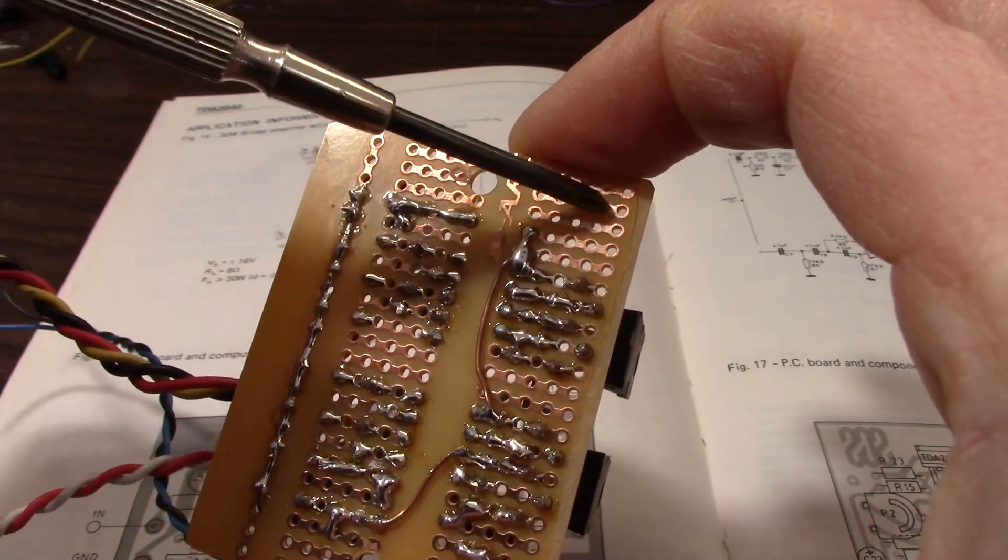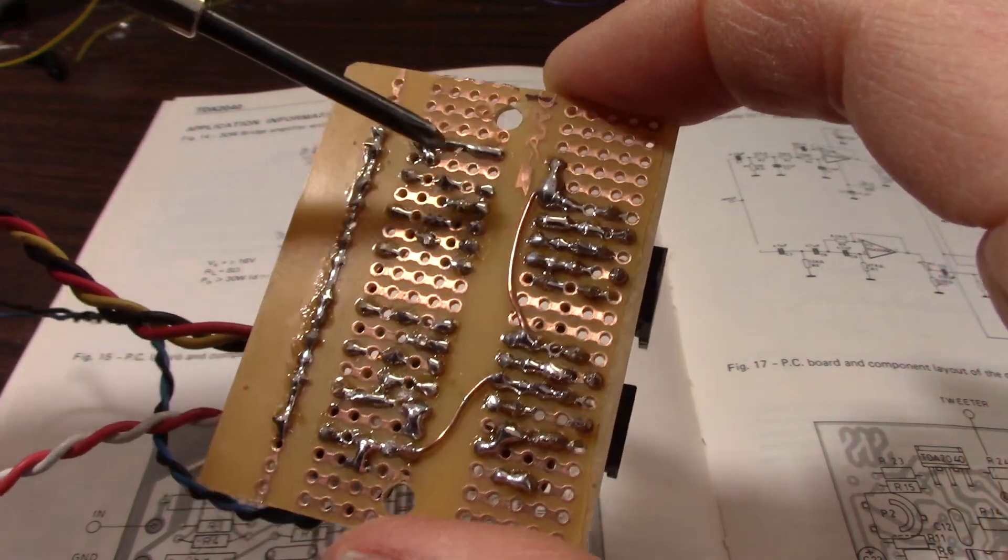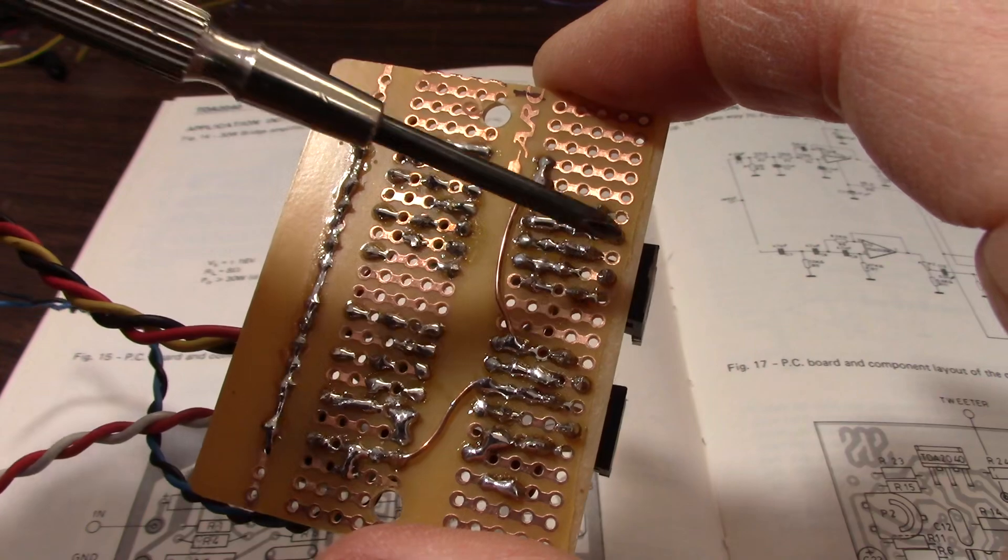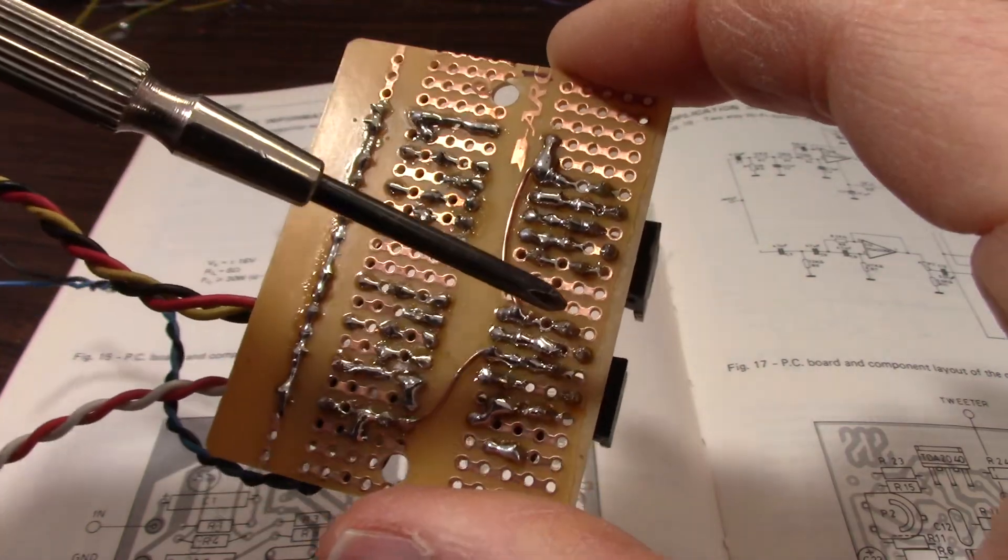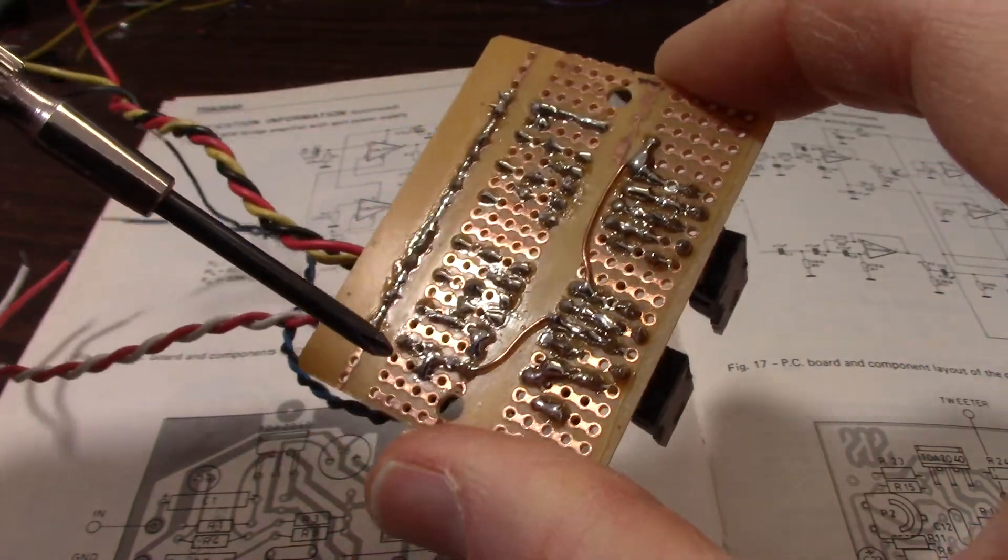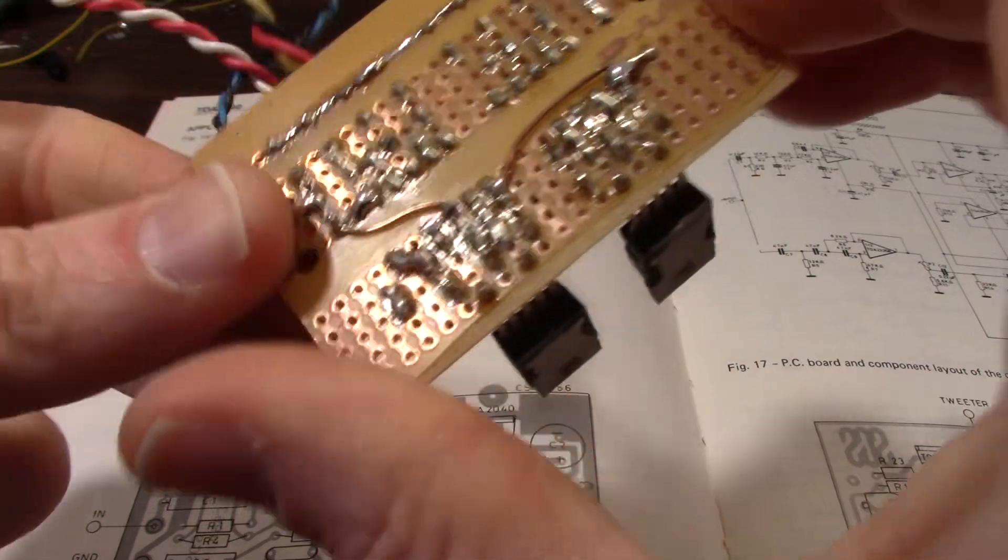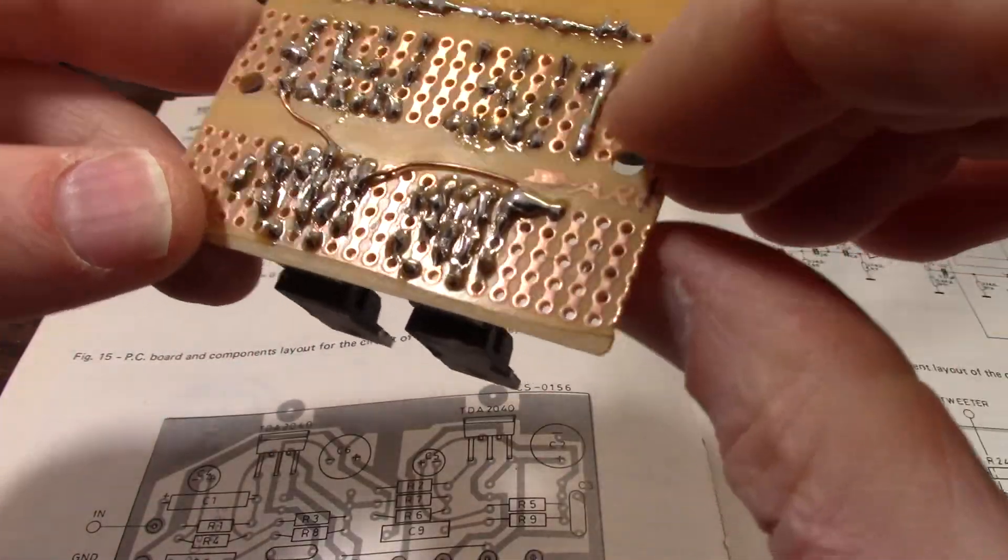At least with the older ones, these traces would lift pretty easily, so you have to pretty much solder across the whole thing to make sure you're not going to get a crack or anything in the trace. So let me grab some components here and get to work on this.